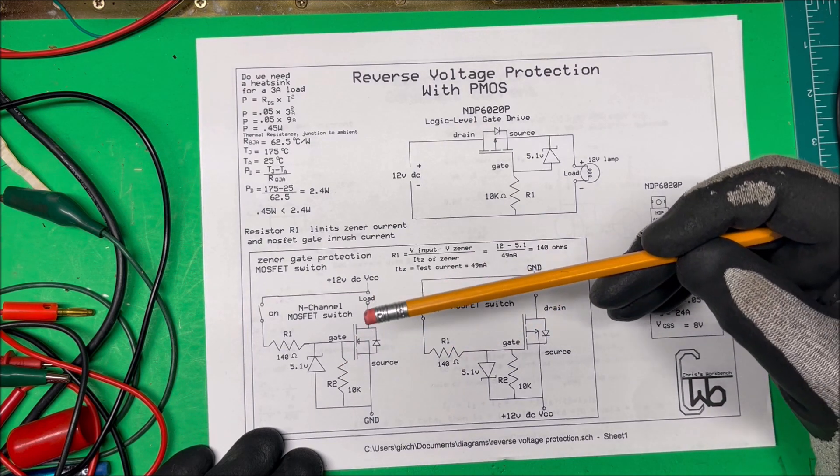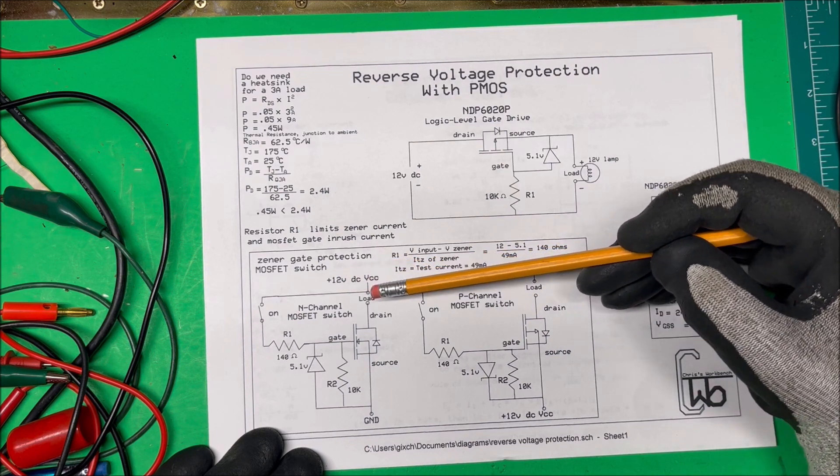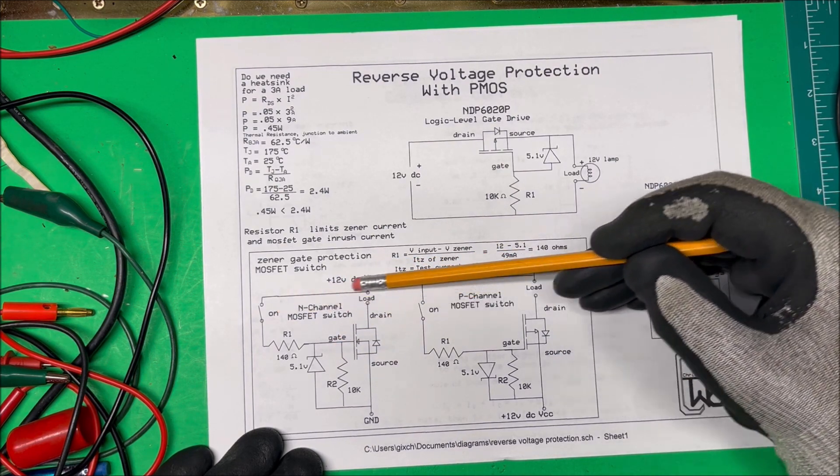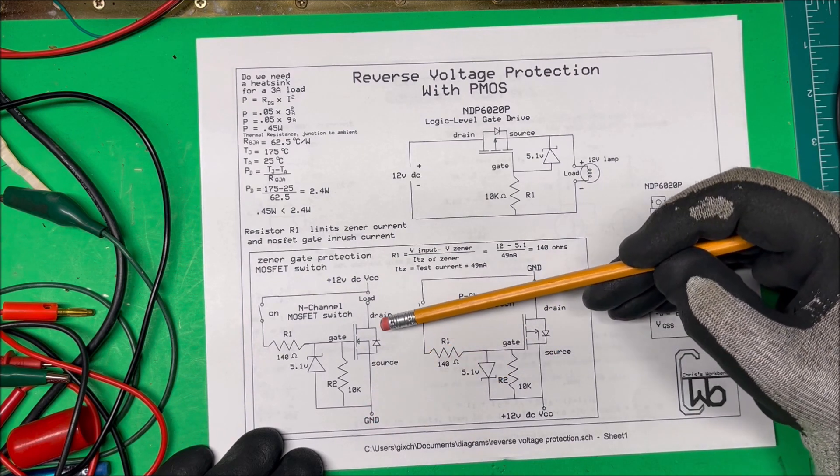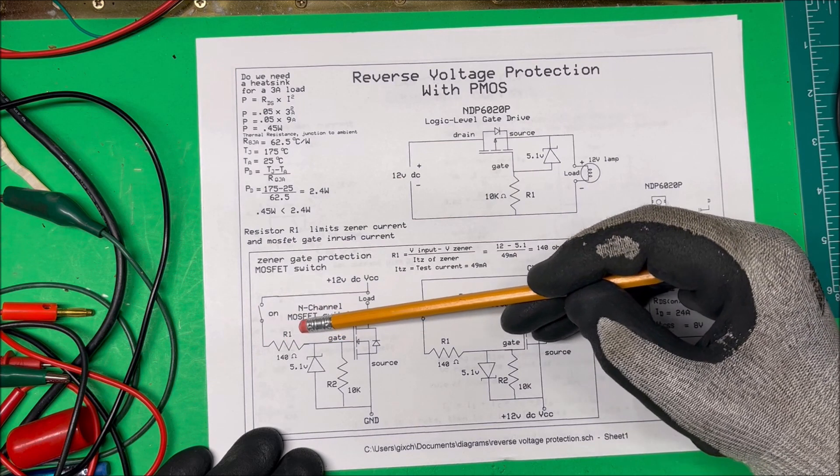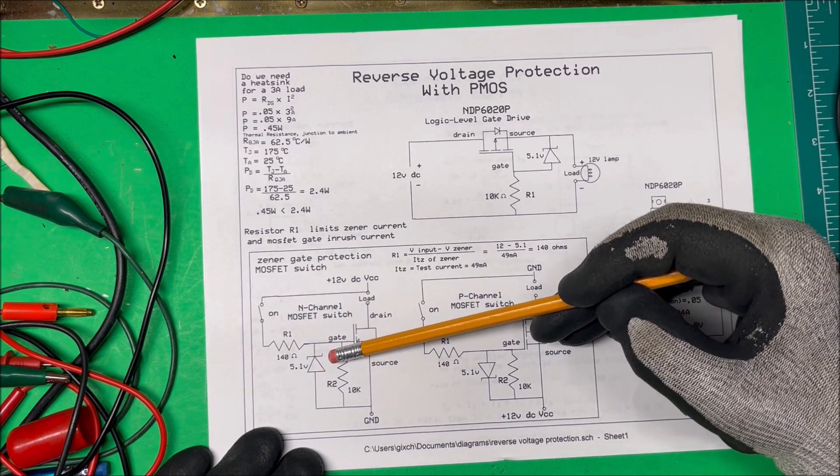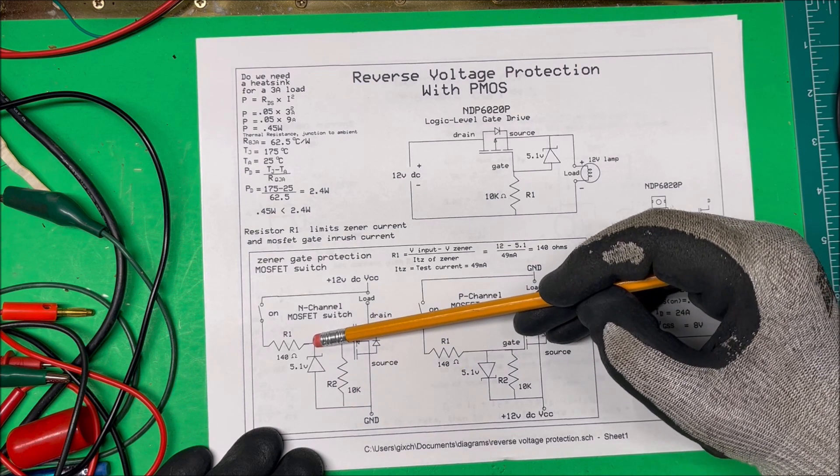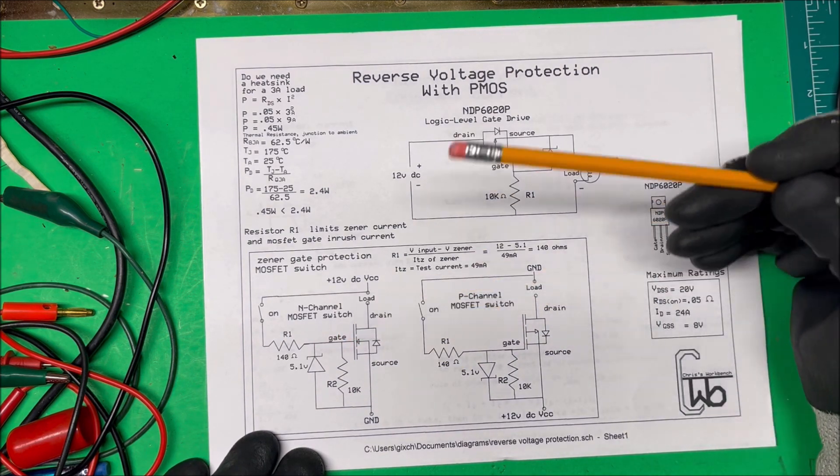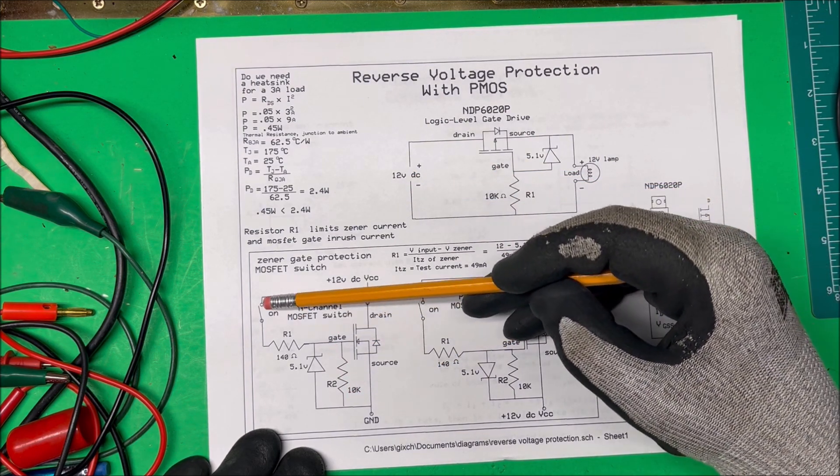So it can only handle about 8 volts on the gate and we have 12 volts source, so we're going to have to bring that back down. We have our source grounded, the drain goes to load, and then we have our VCC up here. When we turn this on, we go through this resistor through the zener here, and we have negative on this side, positive on this side, so we'll have positive 5 volts on the gate and it's going to turn on. This 10k is just there so when we open the switch, the gate goes to ground.